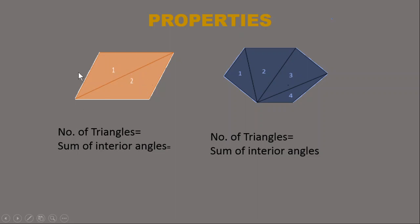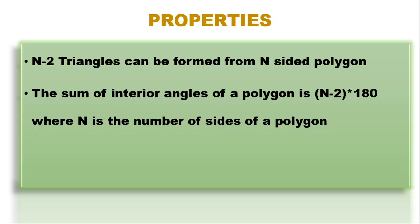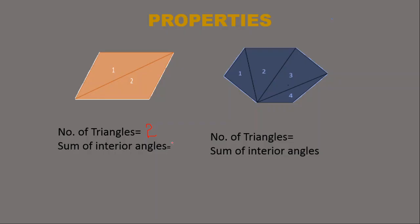Consider a quadrilateral, which has four sides. The number of triangles is n minus 2, which equals 4 minus 2, so two triangles. The sum of interior angles is (n minus 2) multiplied by 180; substituting n equals 4 gives 2 multiplied by 180, which equals 360 degrees. So the sum of interior angles of a quadrilateral is 360 degrees.